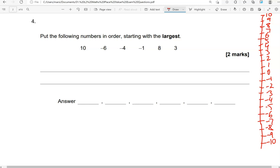So first thing is to start with the positive numbers, because we started with the largest. So I'm just going to go ahead and circle these. So 10, there is 10. We have negative 6, negative 4, negative 1, 8, and 3.